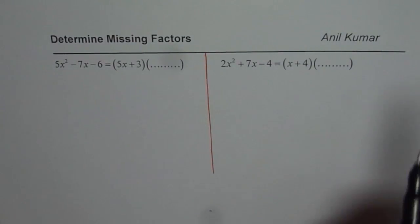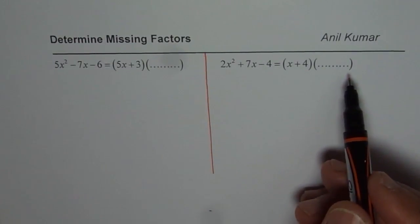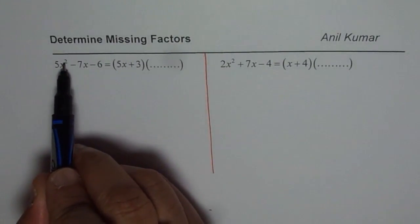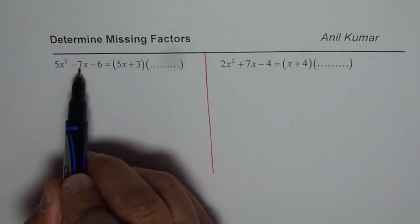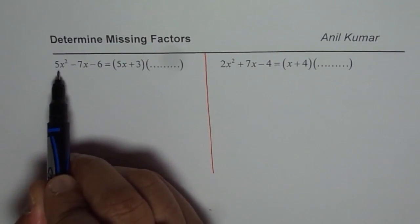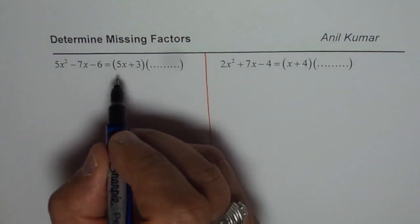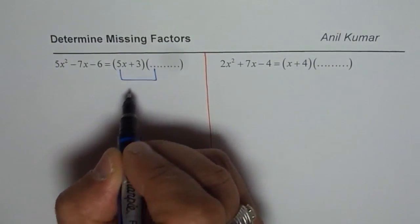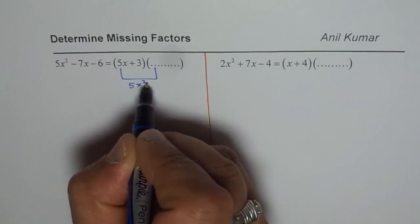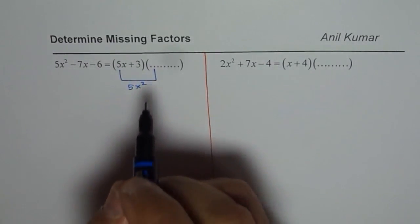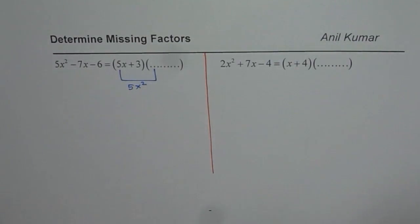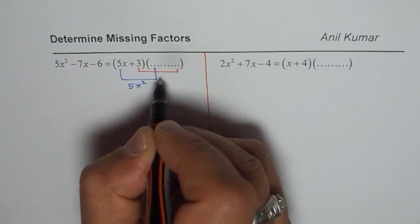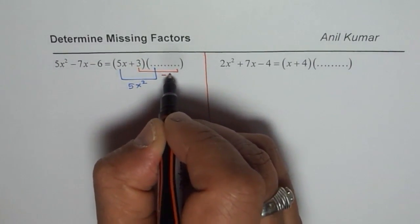You can adopt different strategies to solve such questions. One of them is that you know 5x squared minus 7x minus 6. The term 5x squared you get by multiplying these two numbers. So when you multiply these two numbers, what do you get? You get 5x squared. And if you multiply these two terms, the terms here, then what should you get? You should get minus 6.